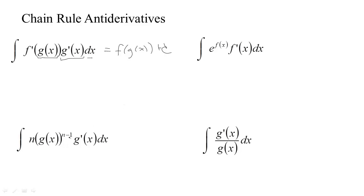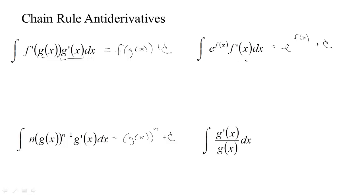We have some special cases, like if the outside function was a power function. The power comes down, we have the function of one power less times the derivative of the inside. That's what usually happens if you take the derivative of some function to a power. Or when you're taking the derivative of e to some function of x, this is exactly what you get — e to the function times the derivative of the function that's up in the exponent.